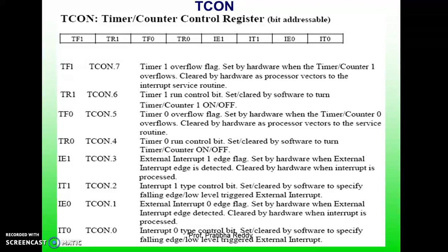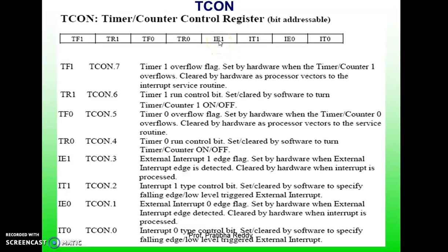Let's discuss the TCON register of the 8051 microcontroller. TCON also contains 8 bits and is bit-addressable. The bits include IT0, which is the interrupt 0 type control bit, and IE0, which is the external interrupt 0 edge flag — set by hardware when an external interrupt edge is detected and cleared by hardware when the interrupt is processed. IT1 is the interrupt 1 type control bit, set or cleared by software to specify falling edge or low-level triggered external interrupt. IE1 is the external interrupt 1 edge flag, set by hardware when an external interrupt edge is detected and cleared by hardware when the interrupt is processed.